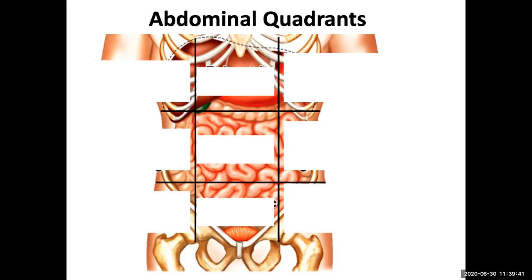What we have to remember here is that it's going to be anatomical mirroring. So what is right and left on the image is not going to be your right and your left — it's going to be the image's right and the image's left. Now let's start looking at the actual regions or quadrants within the abdominal pelvic region.